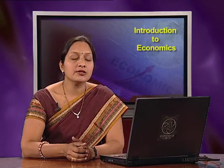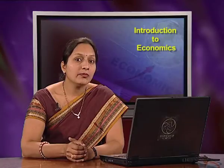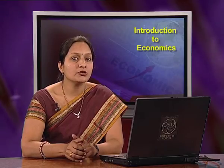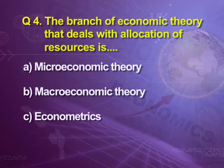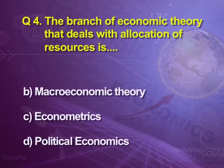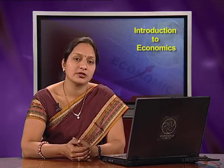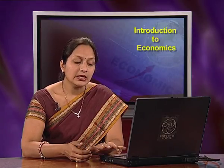Question 4: Which is the branch of economic theory that deals with allocation of resources? Options: (A) microeconomic theory, (B) macroeconomic theory, (C) econometrics, (D) political economics. The answer is microeconomics, because as we know, microeconomics is that branch of economics which deals with allocation of resources.